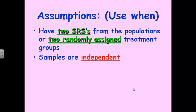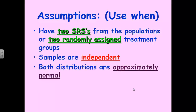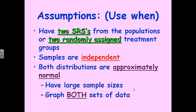Samples must be independent — they must be independent. Both distributions must be approximately normal; that's key. To determine that we use the CLT: either they have large sample sizes, or if sample sizes aren't large, we have to graph both sets of data and see what they look like. Finally, sigmas are known or unknown. 99.9% of the time the sigmas will be unknown, in which case we're going to use T procedures. Every once in a while the sigmas will be known, and then we can use a z-procedure instead.